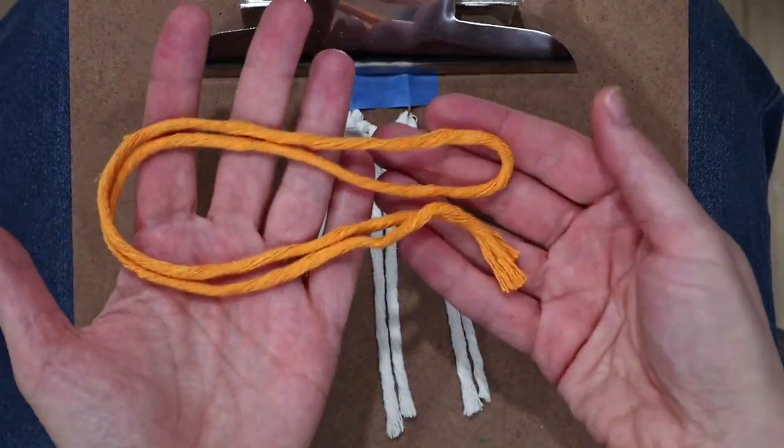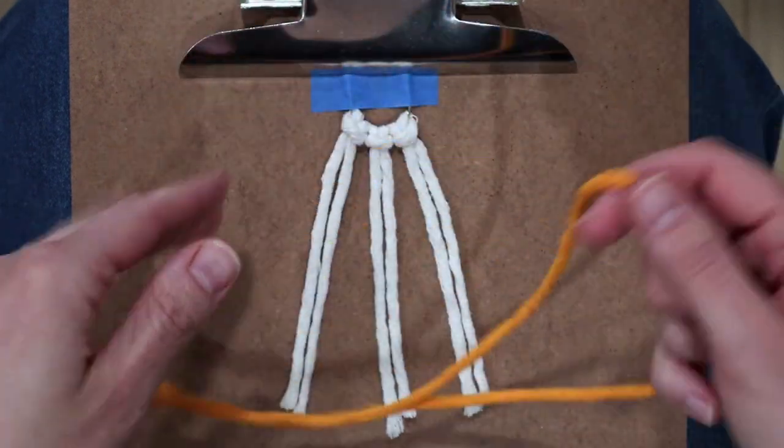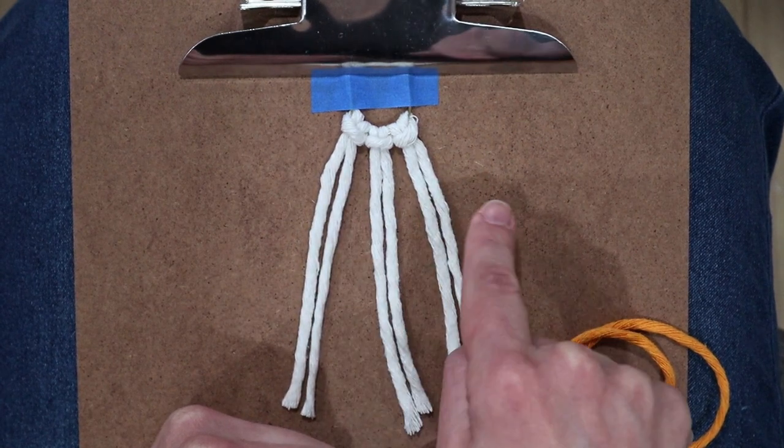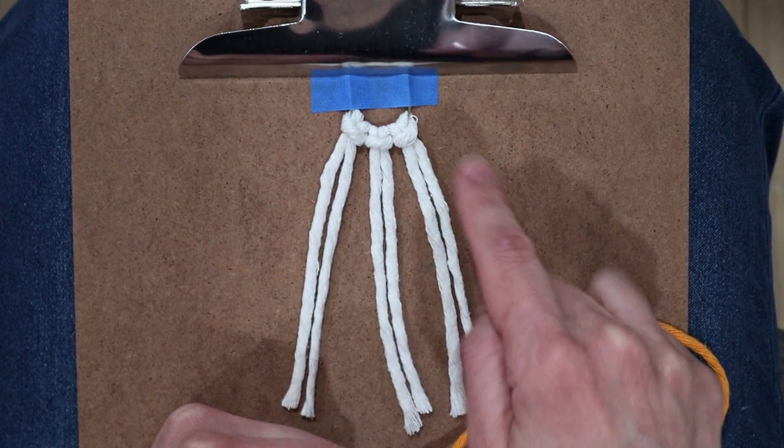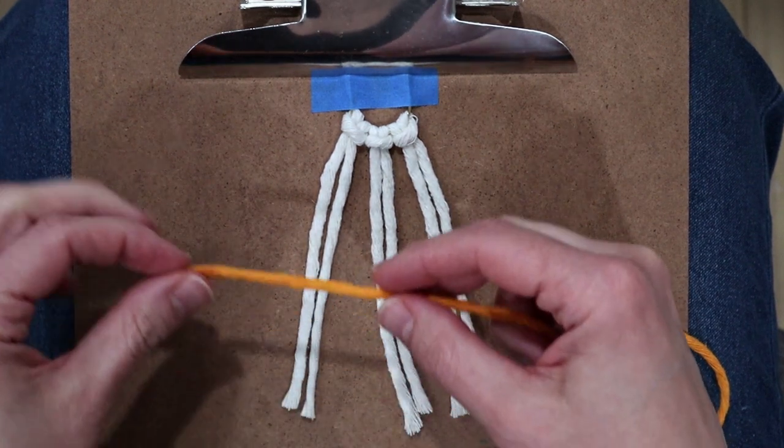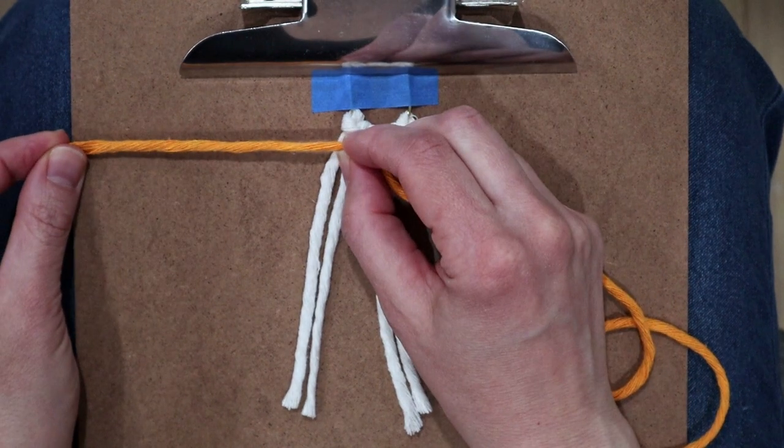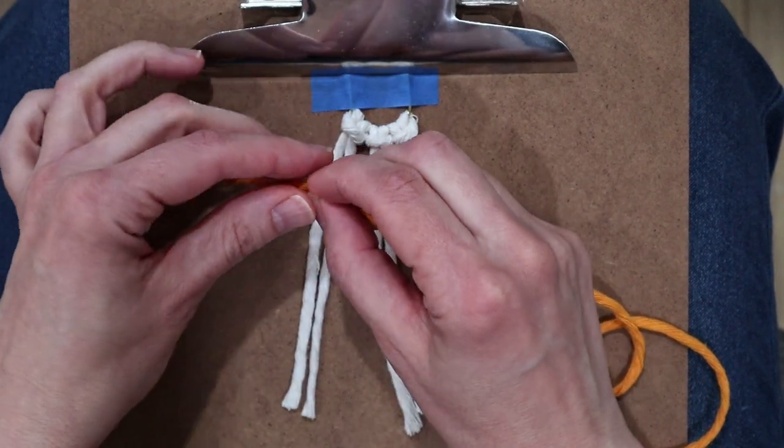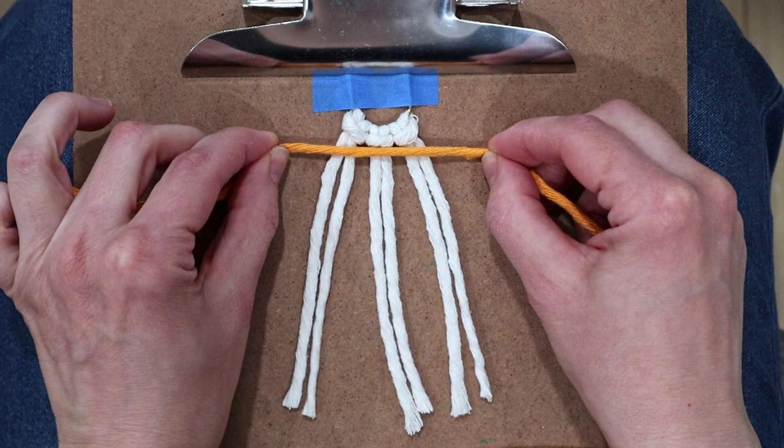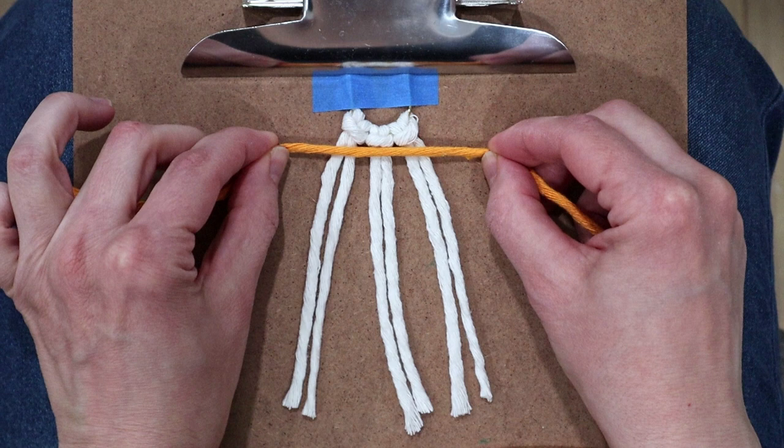Grabbing your other macrame cord, you're going to measure the length that you need. Now for this project we're going to be creating four rows of knots, and depending on the actual width of your paper clip, you're going to be measuring the length that you need as follows. So first you're going to leave off a long tail around three or four inches. For the first row of knots, you're going to want to measure approximately double the width of those dangling cords, or another way to look at it is you're going to want to use double the width of the paper clip itself.